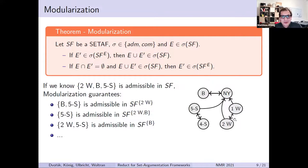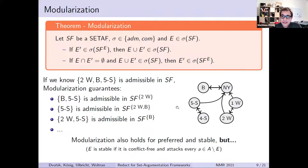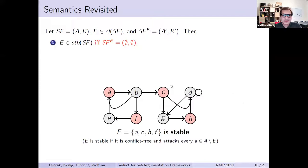Note that modularization also holds in the other direction. That is, if you already know that two weeks, Berlin, and five-star together is admissible in the whole framework, then we also know that the subsets Berlin and five-star, for example, are admissible in the reduct with respect to two weeks. Note that modularization also holds for preferred and stable semantics, but there's a bit of a catch that I'll address shortly.